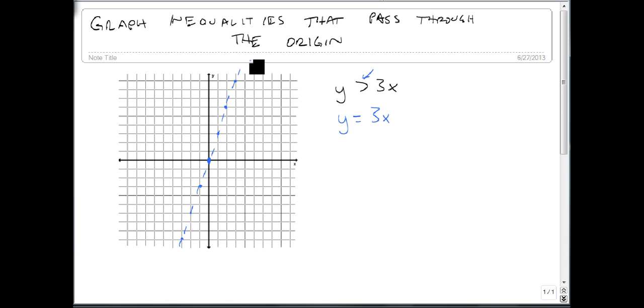And this is where things get different, because now we can't use the point (0,0). Because (0,0) is on the graph of the line. We can't use that. So we have to pick another point.